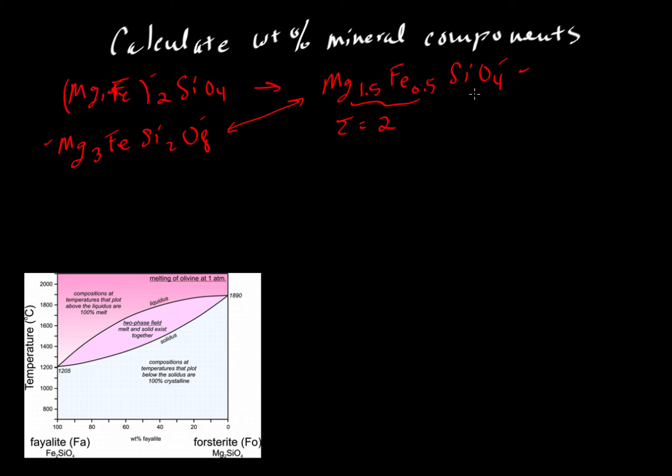Let's use this phase diagram from the online textbook of Dexter Perkins to figure out what temperature this particular composition of olivine would begin to melt. If we take a look at the proportions of the ions, we have a total of 2.